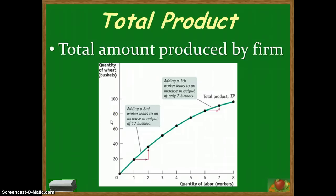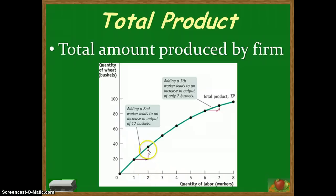However, you'll notice that production does not continue to increase at an increasing rate — it begins to slow down. When I go from one worker to two, I'm adding 17 bushels in output. But when I go from six workers to seven, I'm only adding seven bushels.